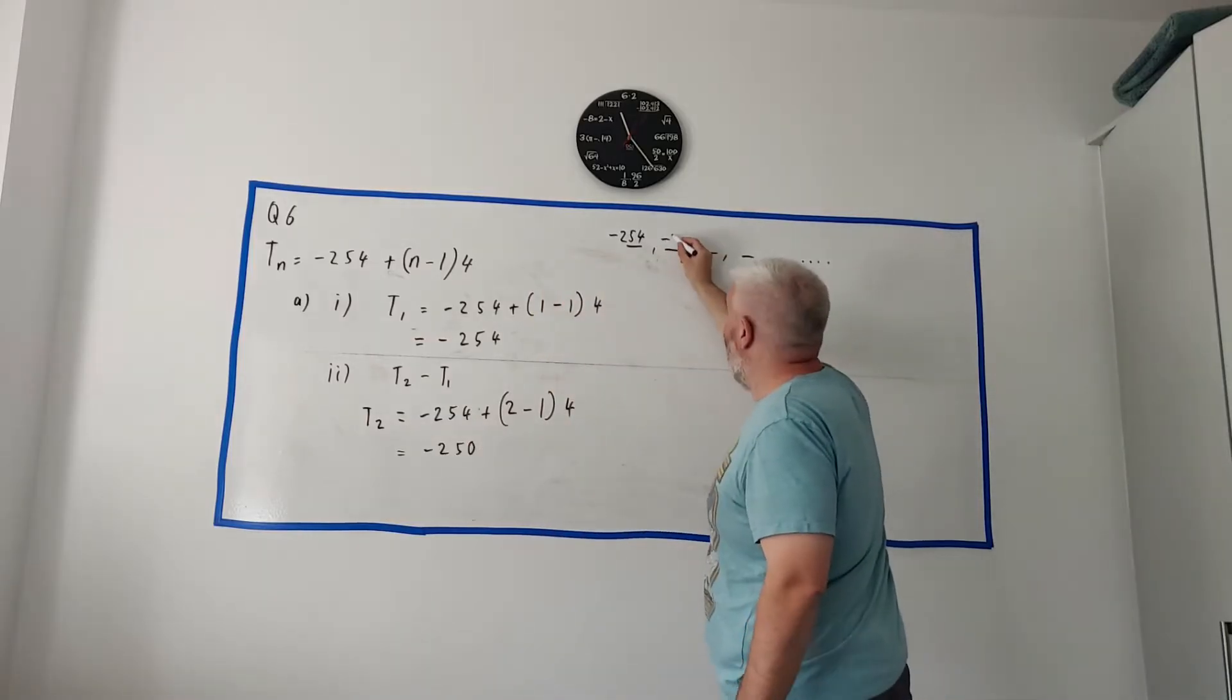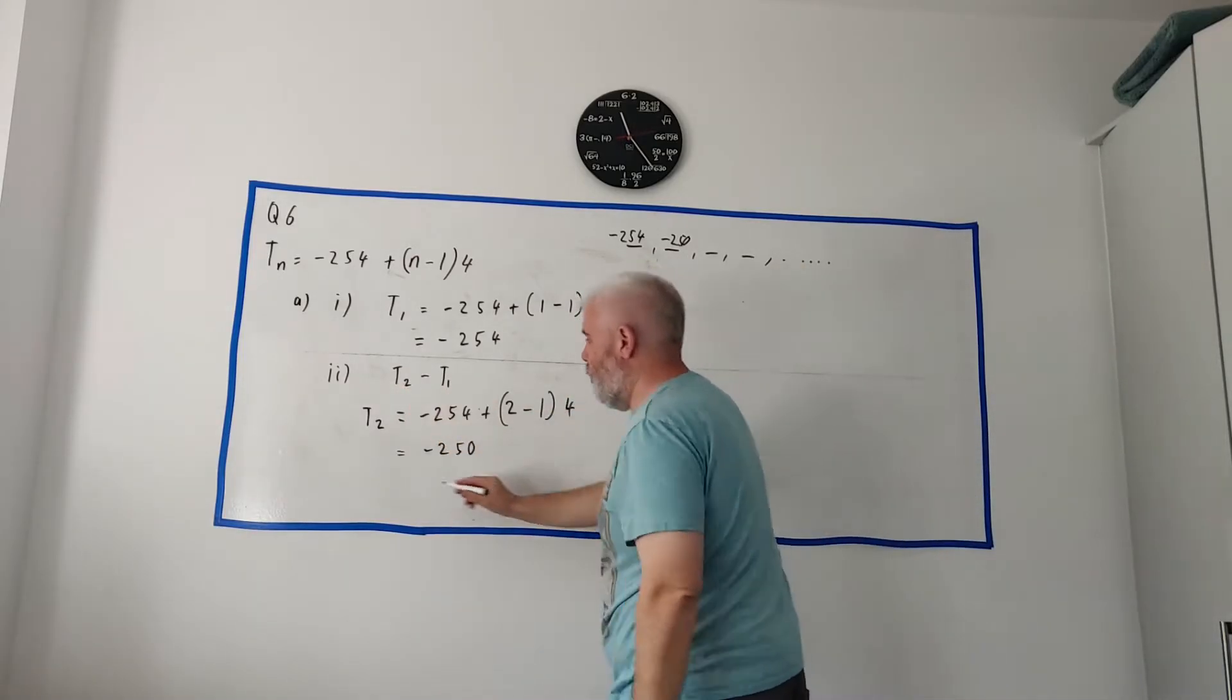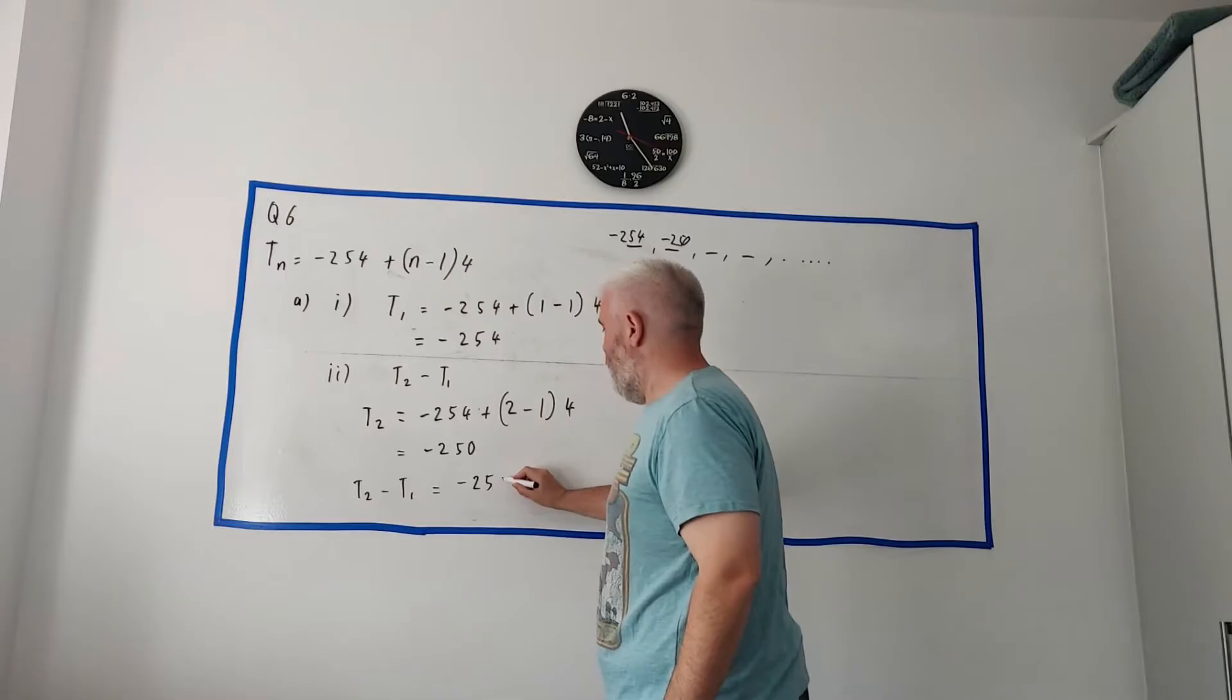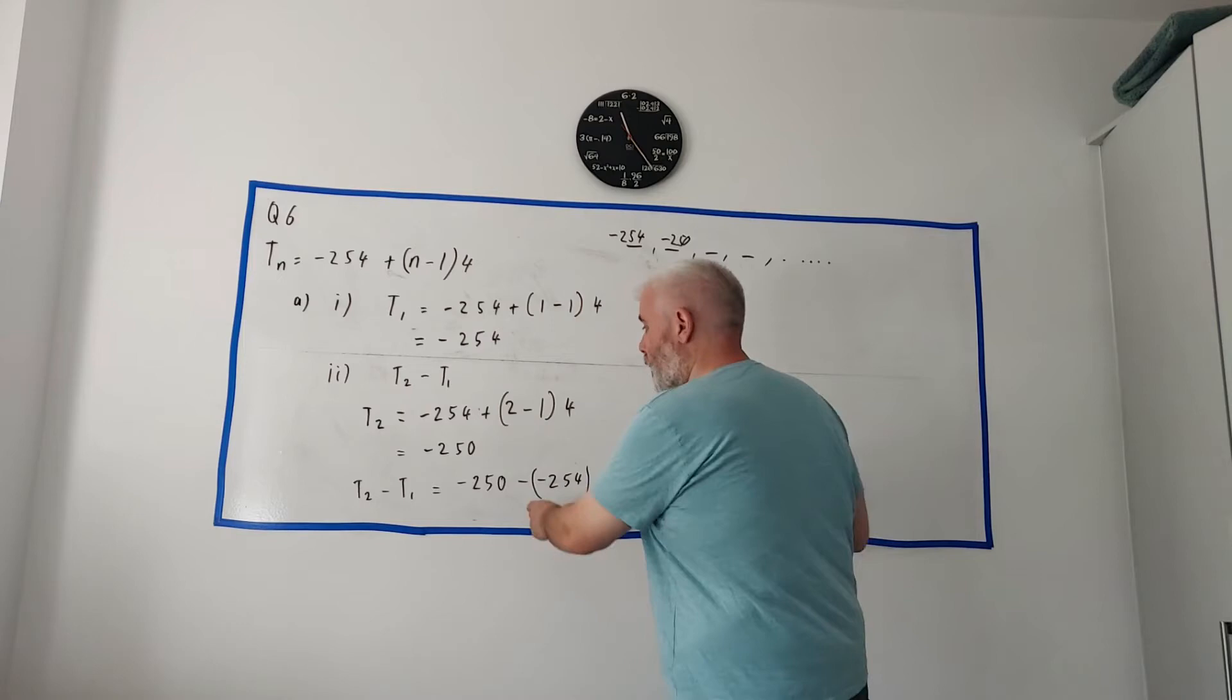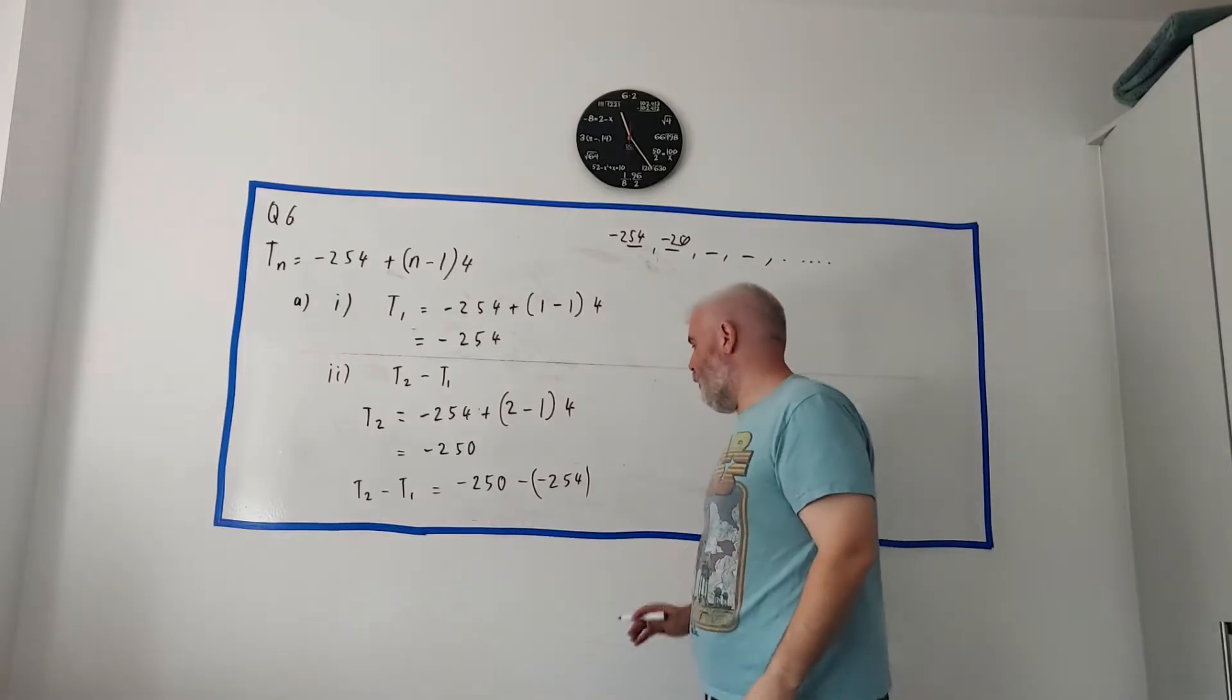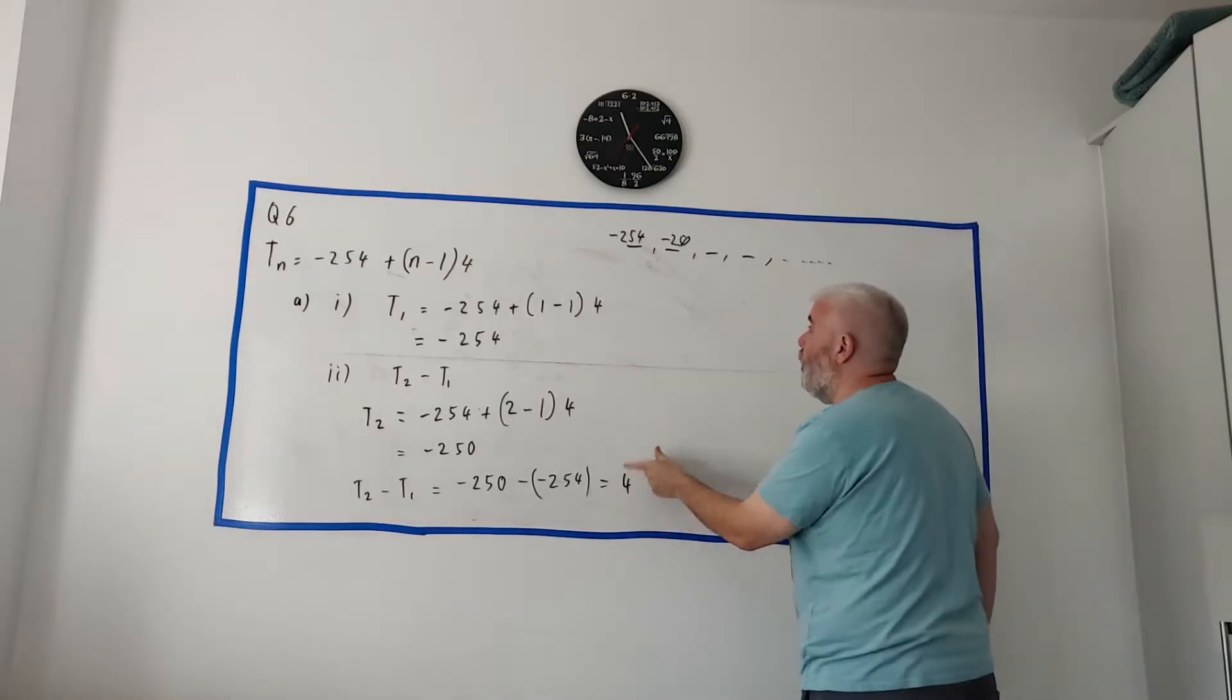That's the second term, 250. So they're just asking us, what's the difference? T2 minus T1. T2 minus T1 is equal to minus 250 minus minus 254. There is a minus here and there's a minus on T1. Put this into a calculator if you're bad at multiple minuses. The answer is 4. This is 4 bigger. It's plus 4, not minus 4. It's 4 bigger.